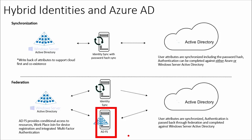The key differentiating point: with synchronization, you can authenticate against either Azure AD or on-premises Active Directory. But with federation, all authentication always reverts back to your on-premises Active Directory.